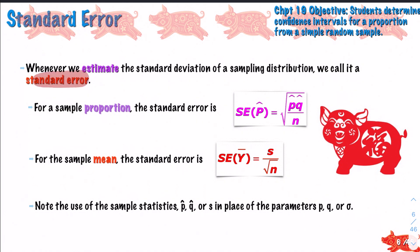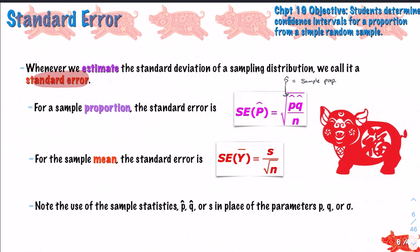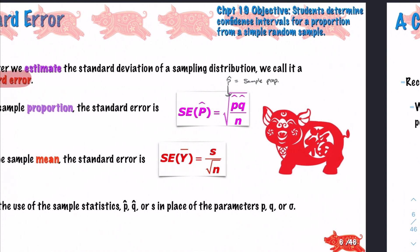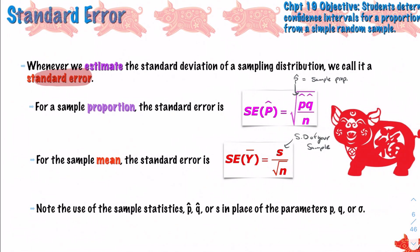The standard error for a sample proportion is the square root of p-hat times q-hat divided by n, where p-hat is your sample proportion - how many people said yes, q-hat is the sample that said no, and n is how many people you asked. Likewise, the standard error for the sample mean is s, the standard deviation of your sample, divided by the square root of n. Note the use of sample statistics p-hat, q-hat, or s in place of the population parameters p, q, and sigma - we are replacing those true population parameters with sample statistics, making it an estimate.